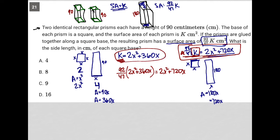I can then simplify this. Let's see. 92 times 2 is 184. So it becomes 184x squared. 92 times 360 is 33,120. So it becomes plus 33,120x. And of course, this is still all over this 47 here is equal to 2x squared plus 720x.